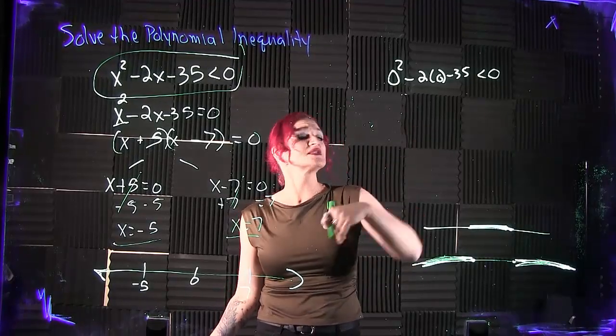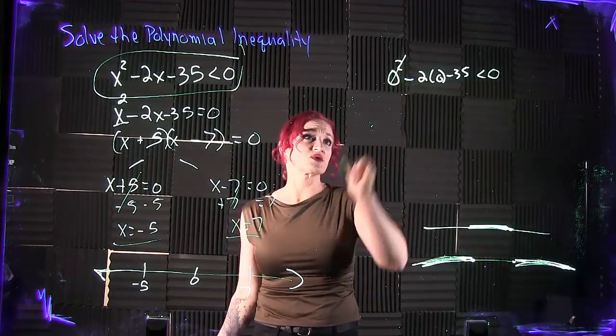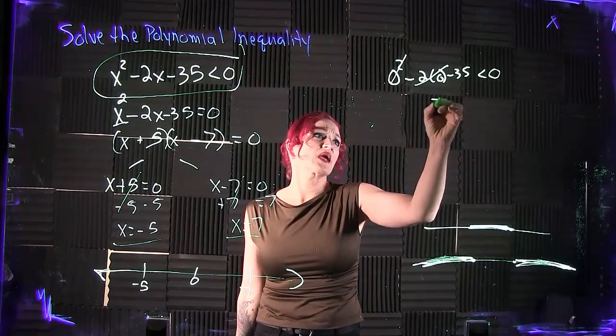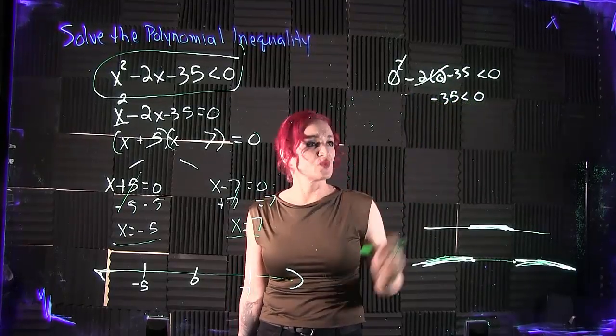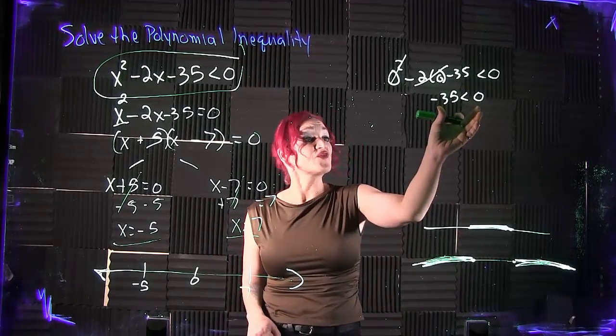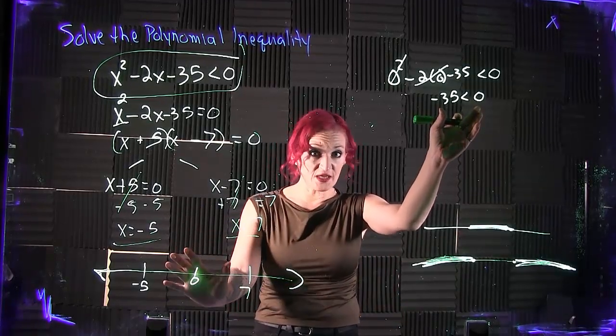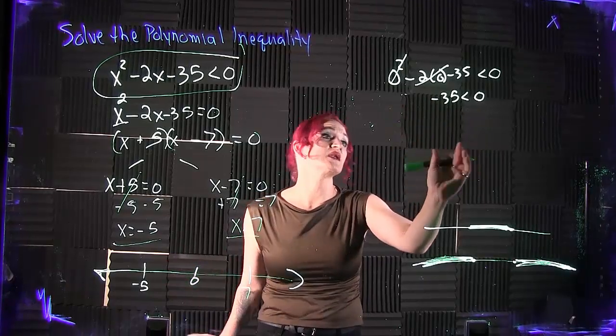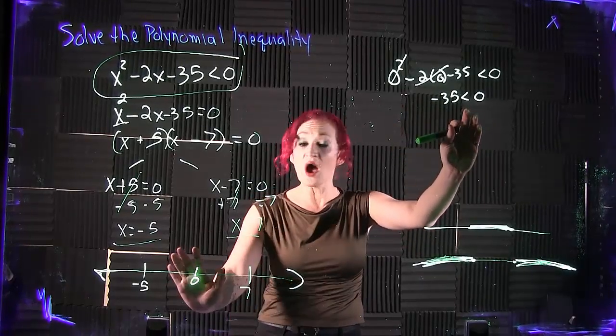Plugging in 0 and simplifying this: 0 squared is 0, negative 2 times 0 cancels, and we are left with negative 35 is less than 0. If this is true, we're going to shade the section that that 0 was in. If this is not true, we do not shade that section.